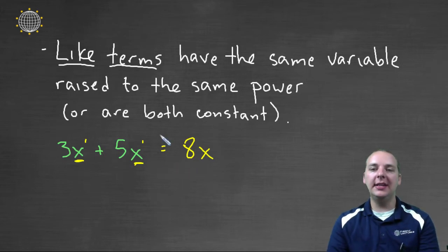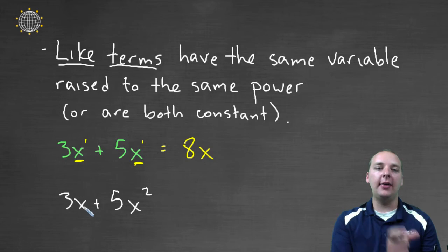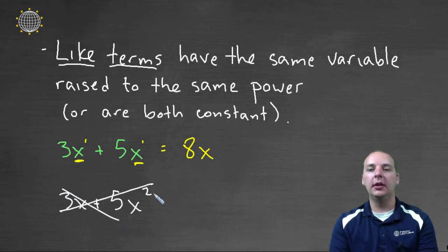Alright, now if there was any changes made to this, then they would no longer be like terms. For instance, if you had three x plus five x squared, these look pretty similar to the way it was written, but you cannot add three x to five x squared. These would not be considered like terms.